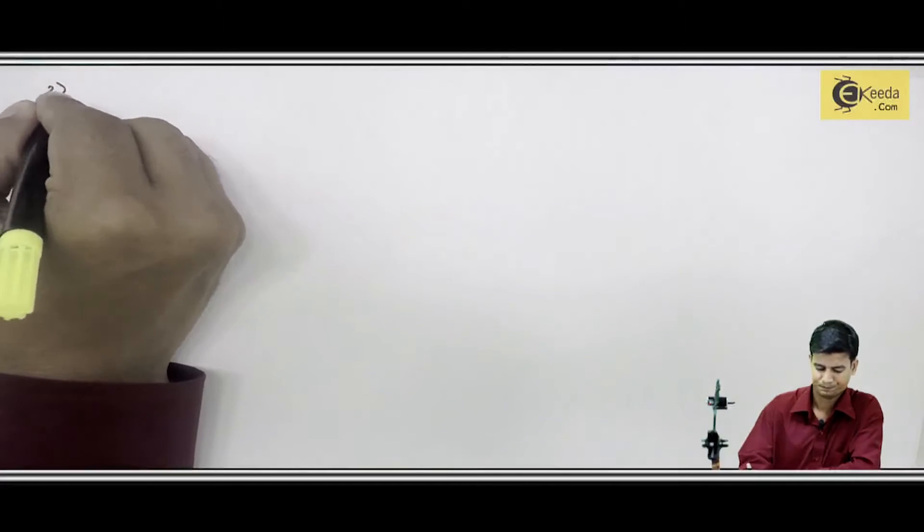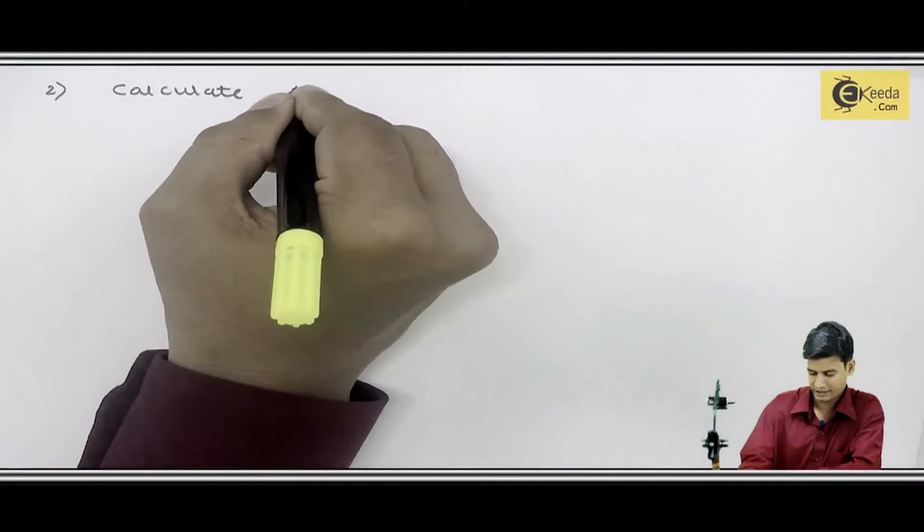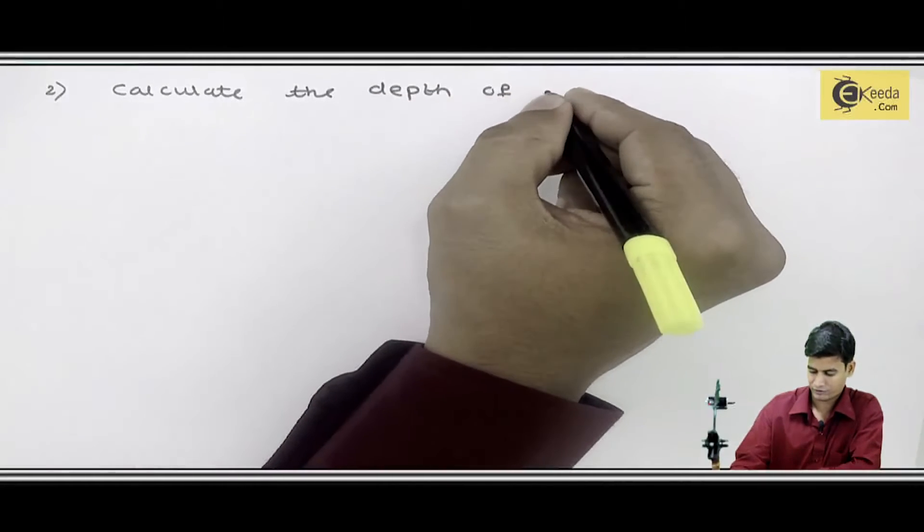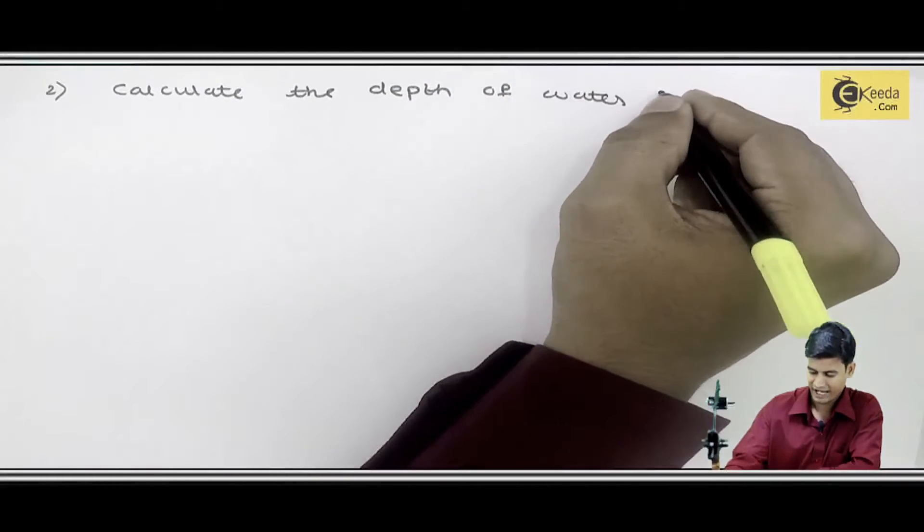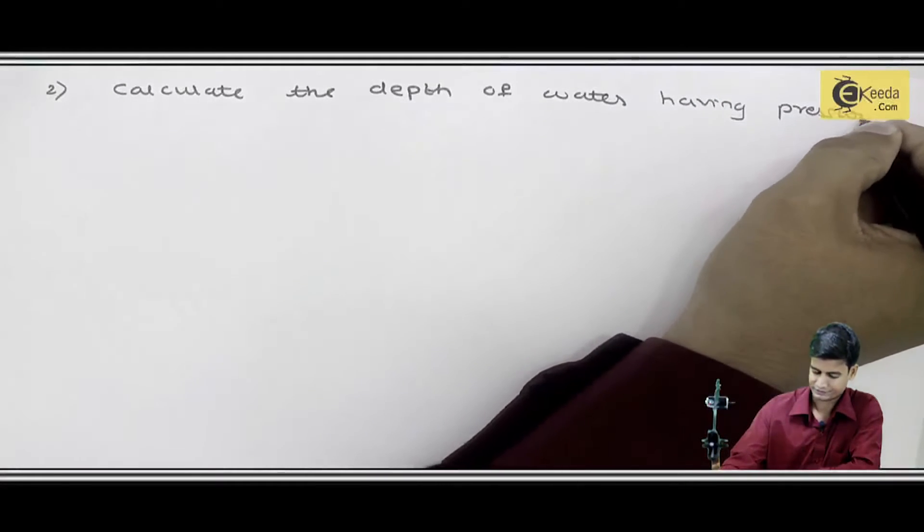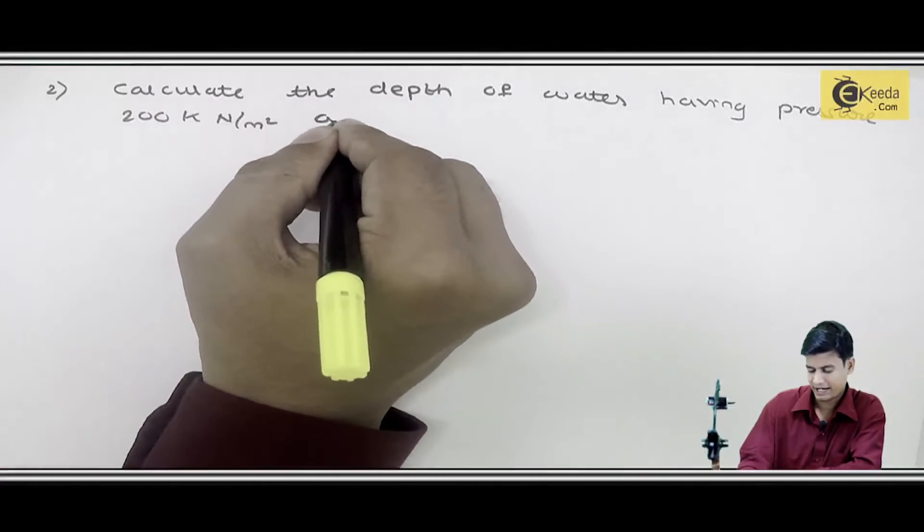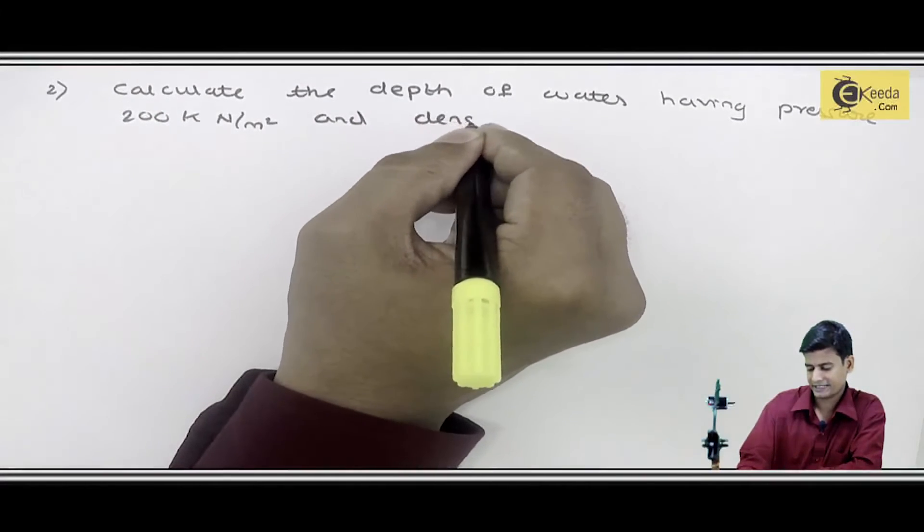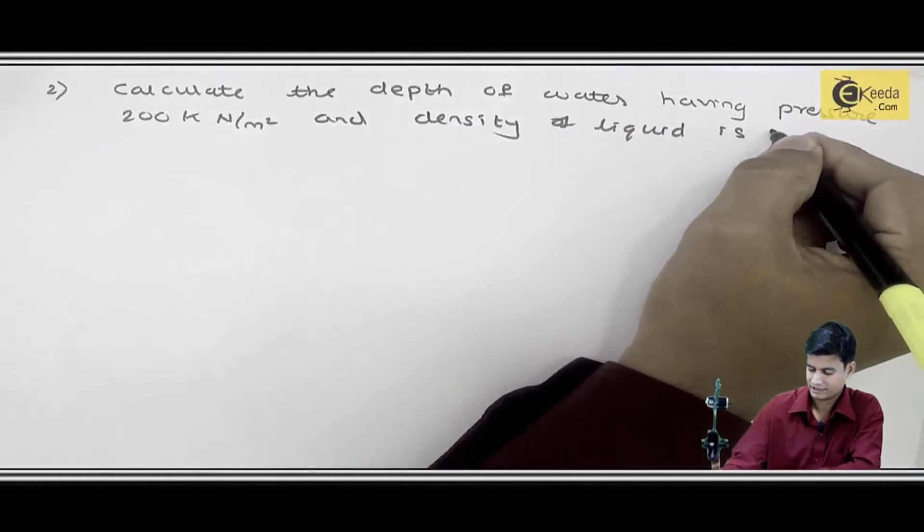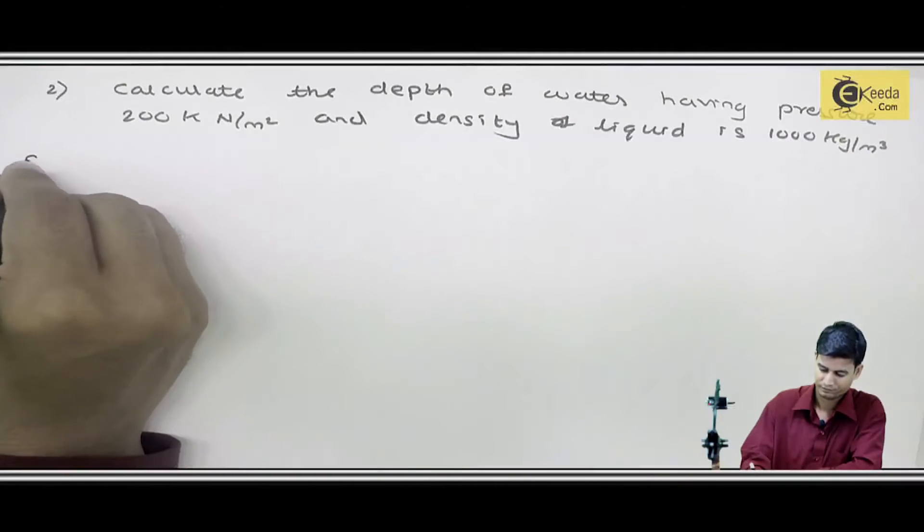Sum number 2: Calculate the depth of water having pressure 200 kilonewton per meter square and density of liquid is 1000 kilogram per meter cube. Solution: